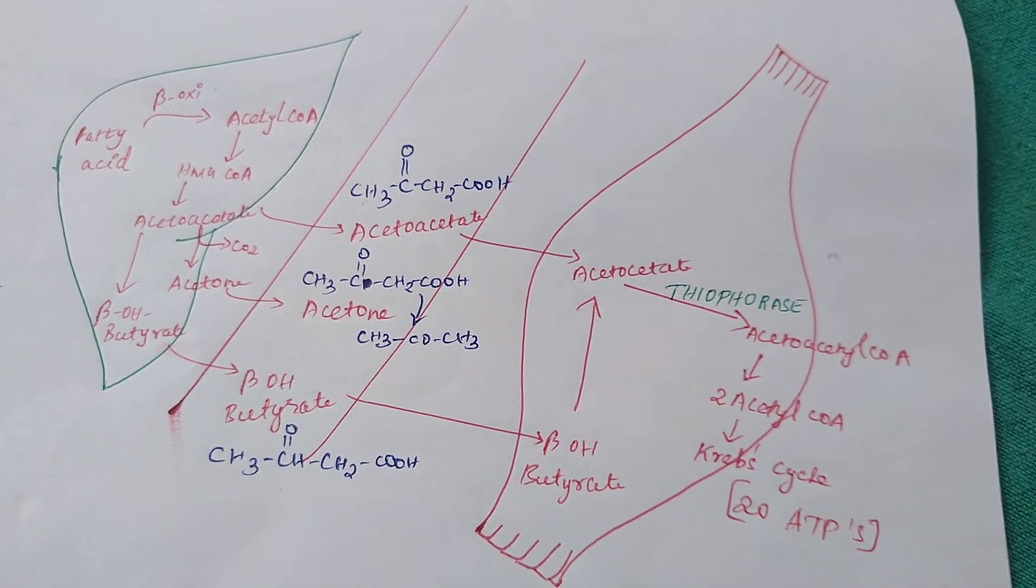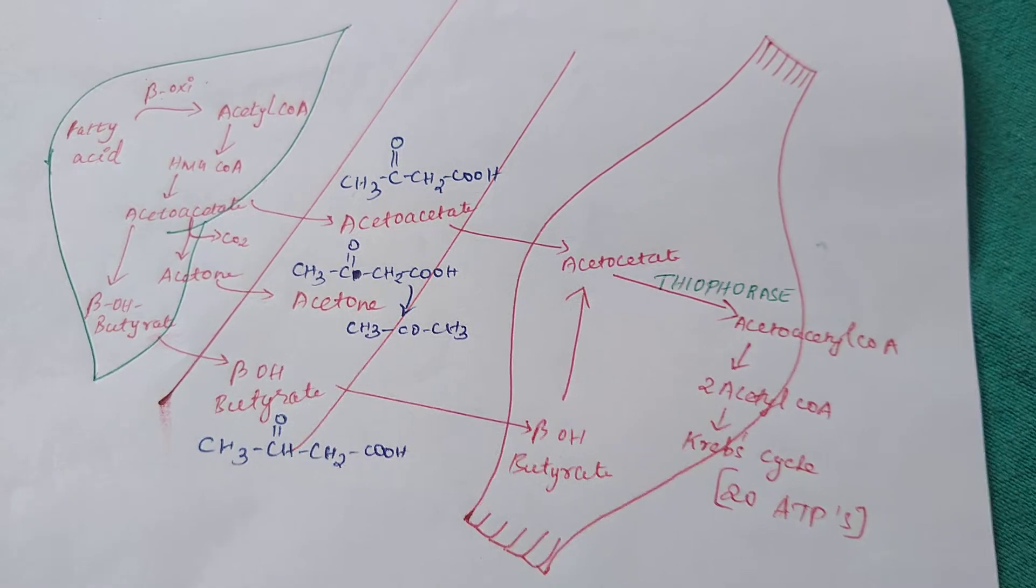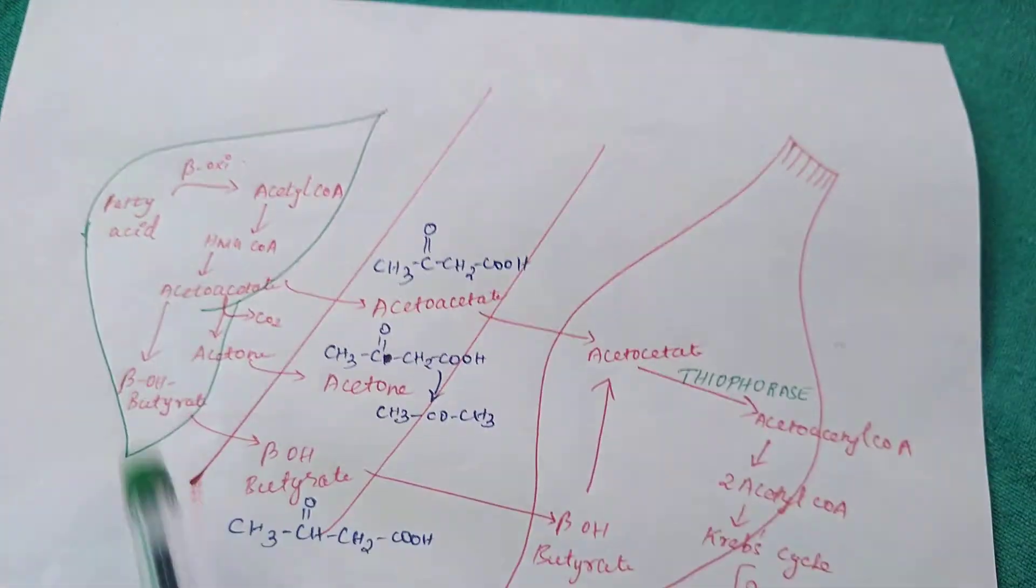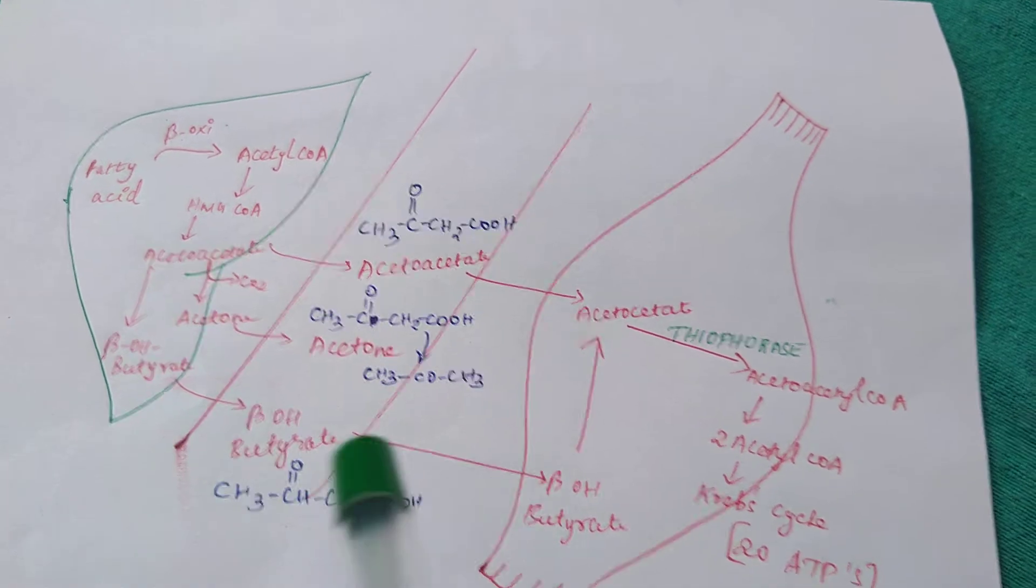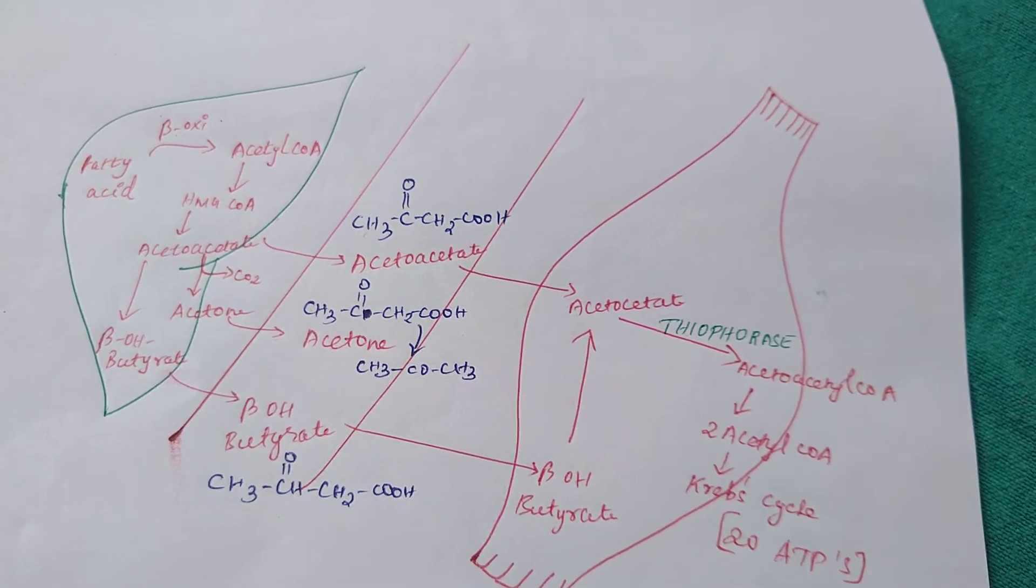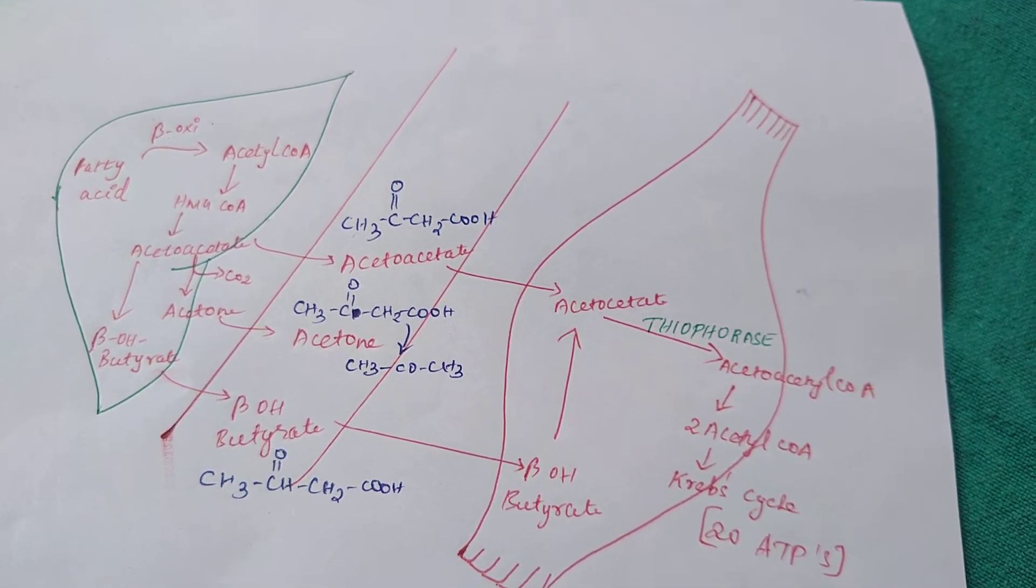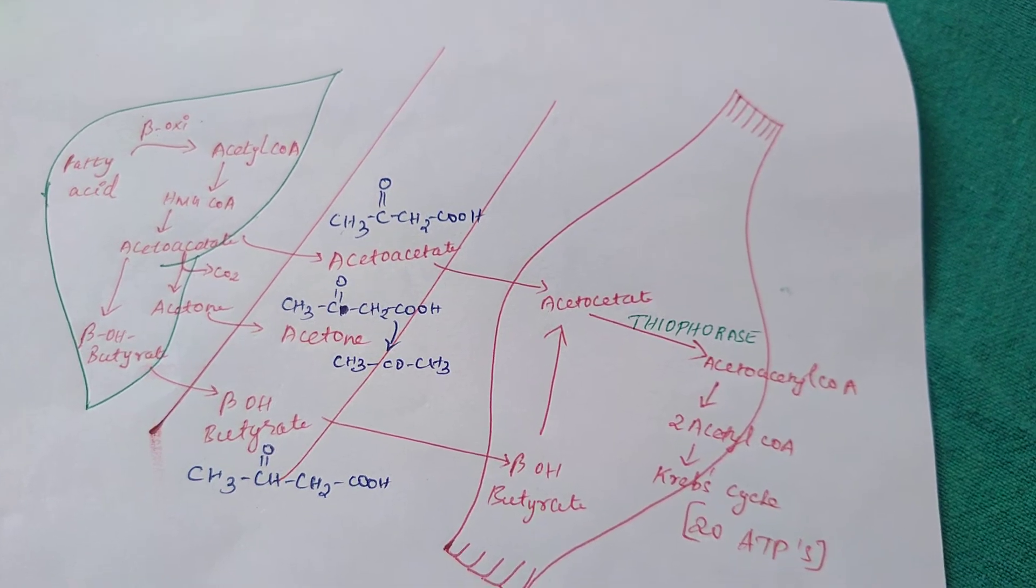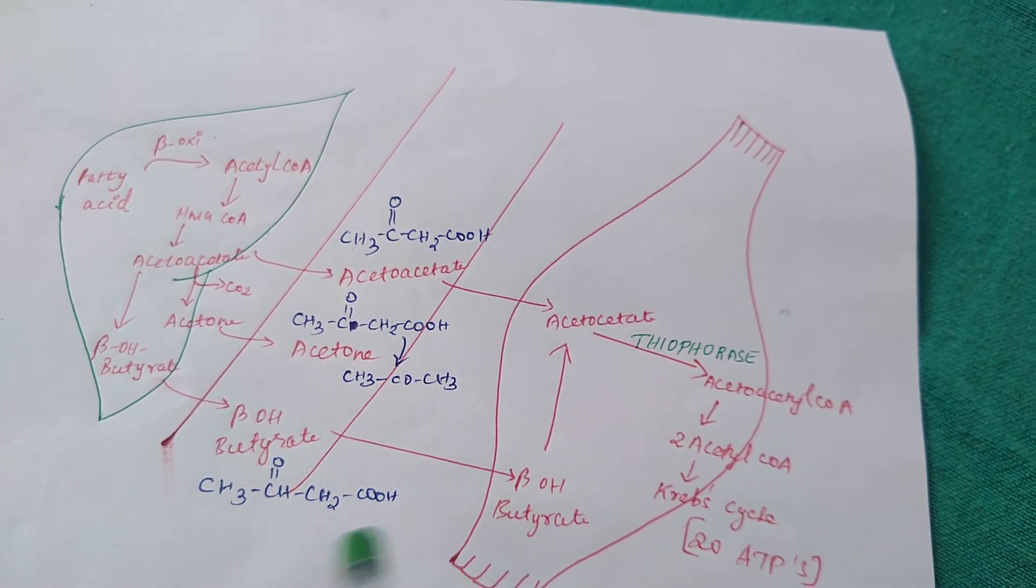Welcome friends, today we're going to see conditions causing ketosis. Before that, a little review about ketone bodies. Normally if you see ketone bodies in the urine, you will think of DKA and the patient will die of ketosis. It is true to some extent, but it is not always the rule.